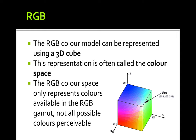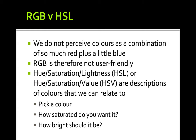The RGB color model can be visualized as a 3D cube, where one axis represents red, another green, and the third blue. At the corner where all values are 255 (255, 255, 255), we get white. At the origin where all values are 0 (0, 0, 0), we get black.